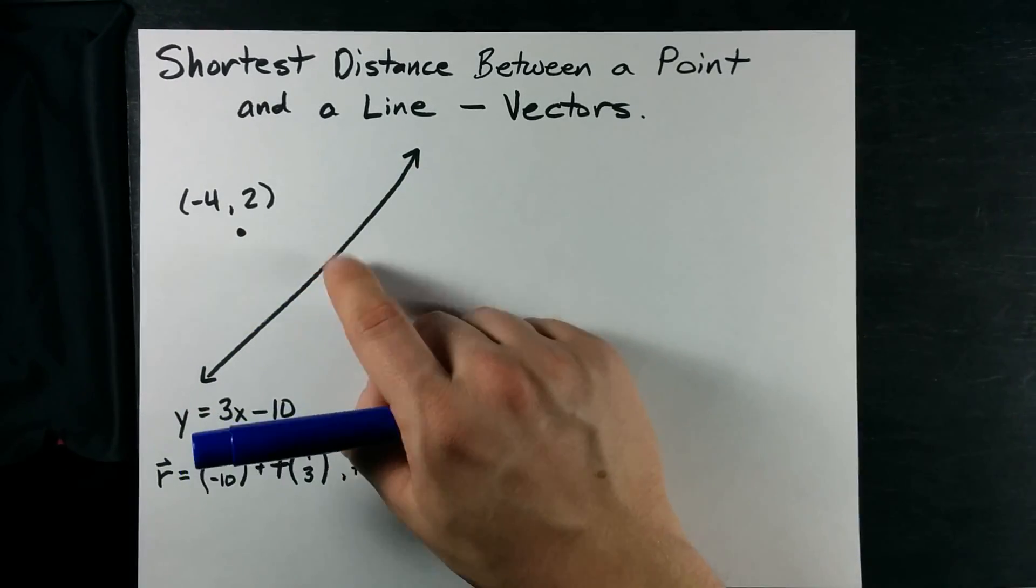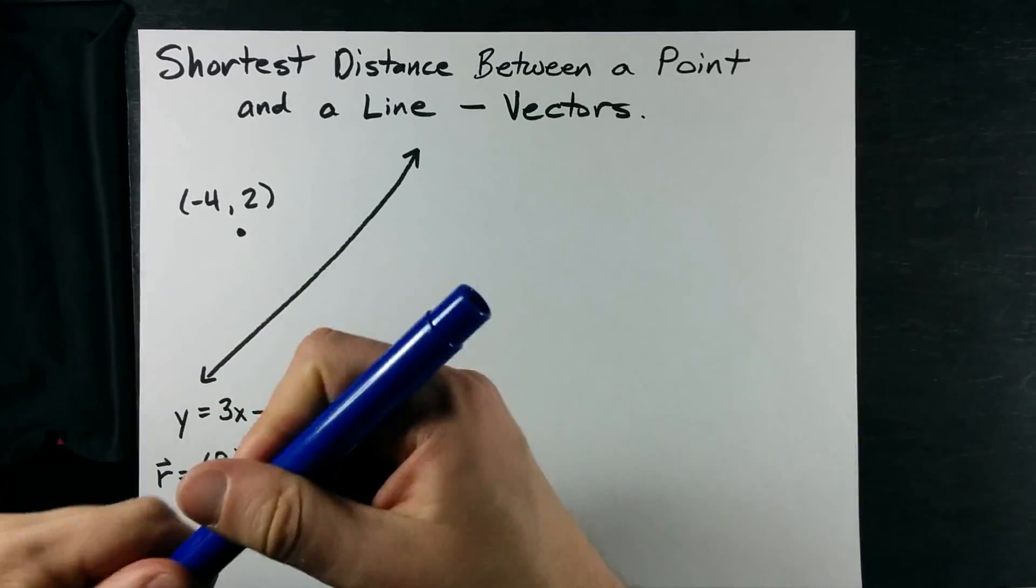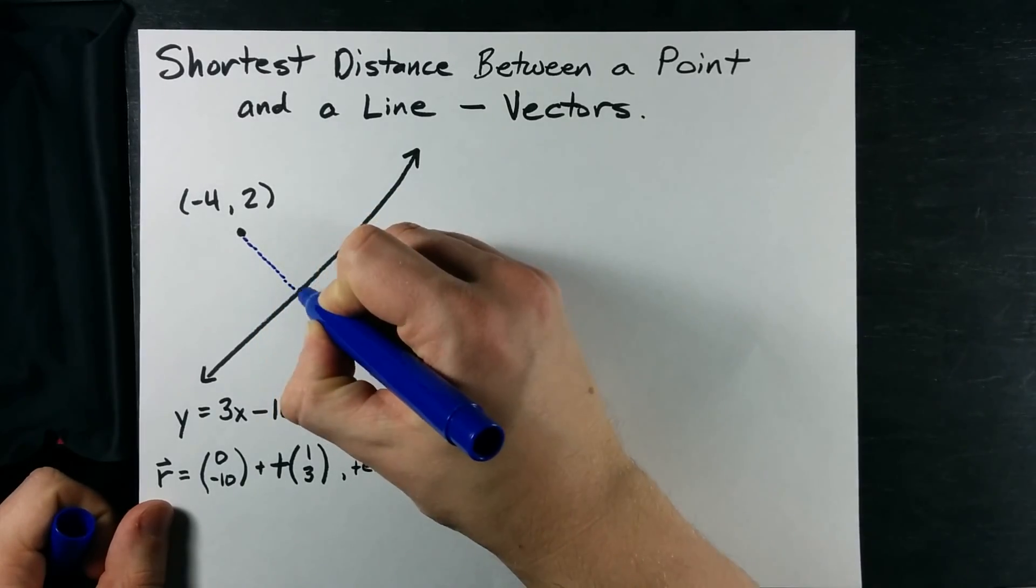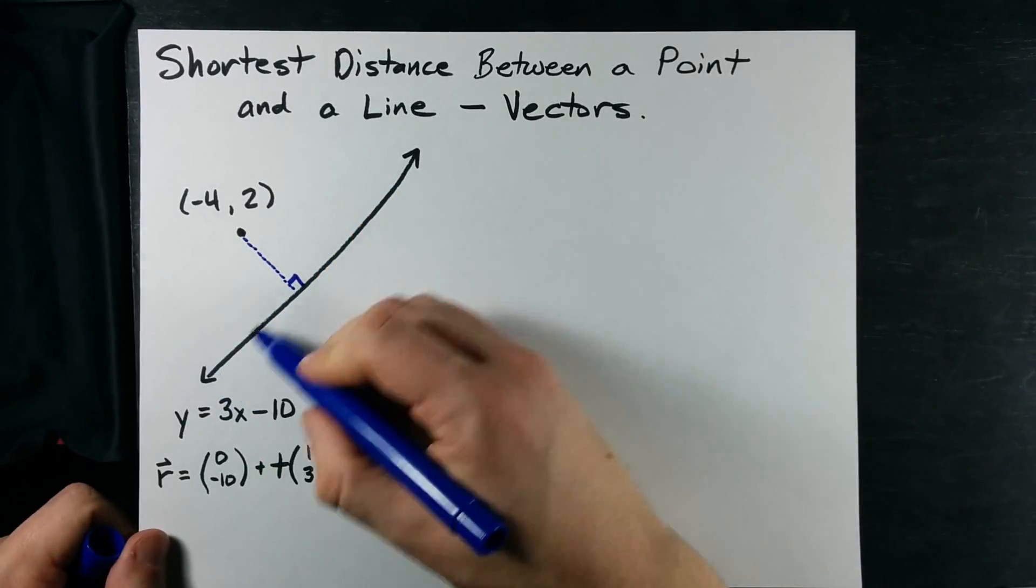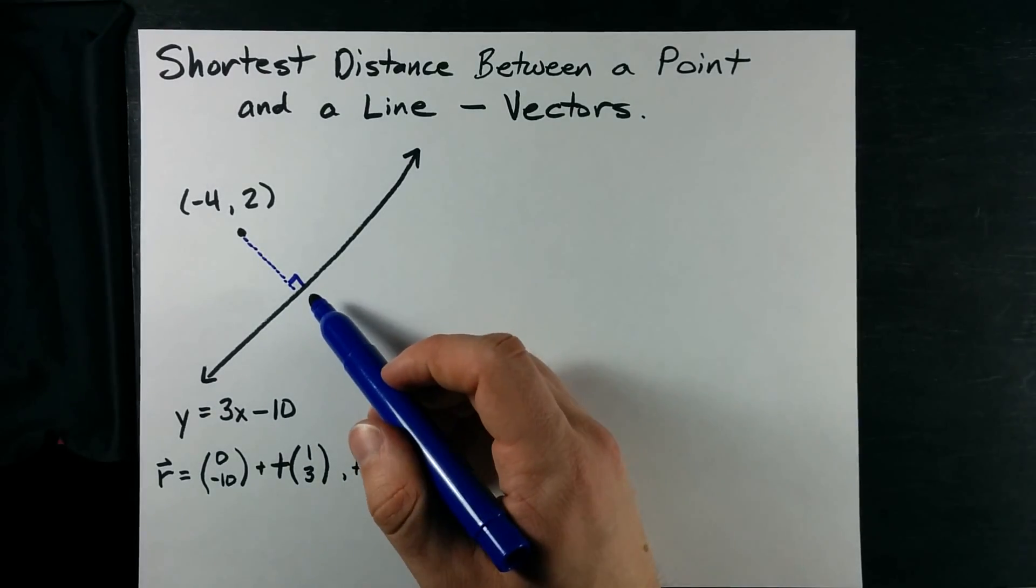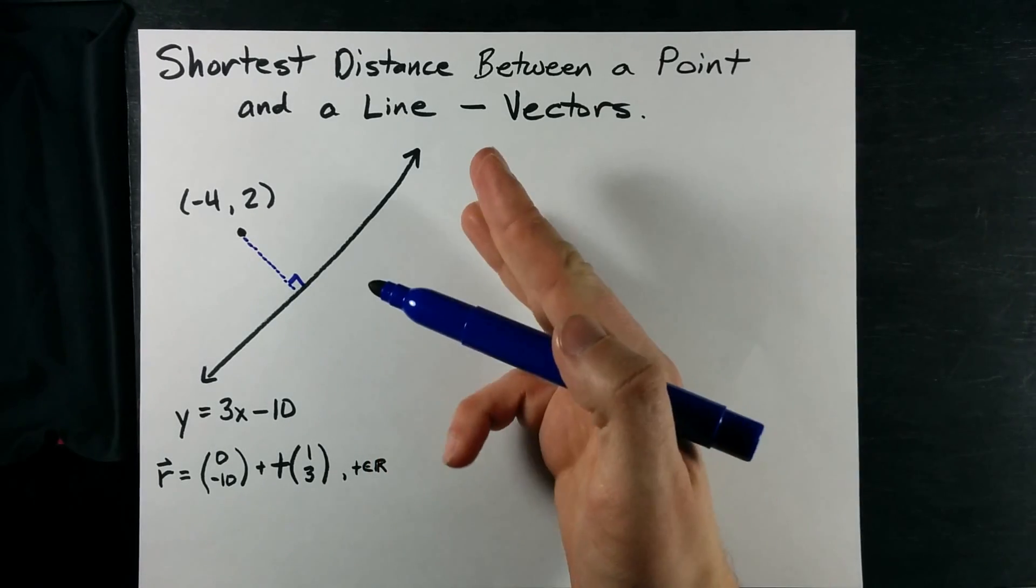We want to know what the shortest distance is between here and there. The real key to this question is knowing that that shortest distance is this line segment which meets the line at a perpendicular or 90 degree angle. If you're feeling vector-y the word might be orthogonal.